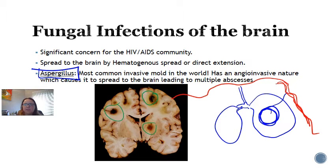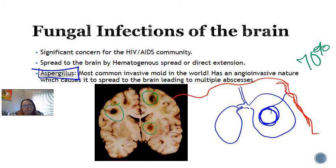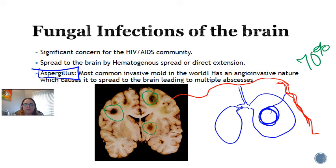The mortality of this particular type of infection, despite antifungal therapy, is still greater than 70%. For Aspergillus infections in the brain, you're going to make a diagnosis using the mycology lab. The organisms can be seen using high power with a silver stain, but it's still pretty difficult. So again, we're largely going to talk about Cryptococcus now, but don't forget that there are other important fungal infections that affect the brain, particularly ones like Aspergillus.